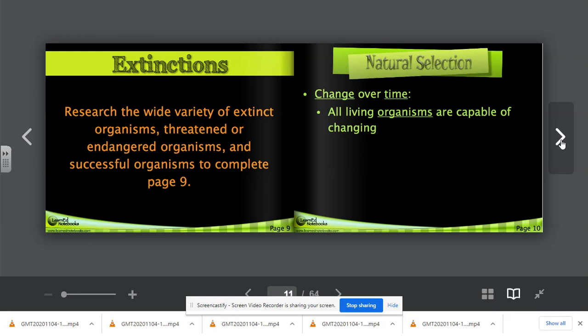On page nine, research the wide variety of extinct organisms, threatened or endangered organisms, and successful organisms to complete page nine. You will see that you have three columns. Extinct organisms are those that are no longer on our planet. They no longer exist. Endangered organisms are organisms that are in danger of becoming extinct. And then finally, successful organisms. These are organisms that have been able to withstand a variety of changes in their environment, their habitat, their food sources, etc. On the space below on page nine, compare and contrast these organisms in terms of adaptations, time periods that they lived in, habitats, threats to them, and other characteristics. When you're finished, turn to page ten.